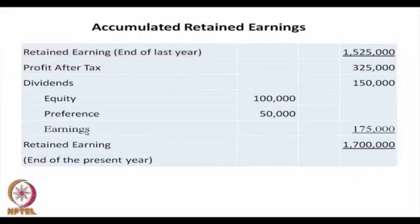Earnings is the difference when we subtract dividends from profit after tax: 150,000 subtracted from 325,000 leaves 175,000 rupees. This 175,000 is added to 1,525,000 rupees, which was the retained earning at the end of last year, so retained earning at the end of this year becomes 1,700,000 rupees.